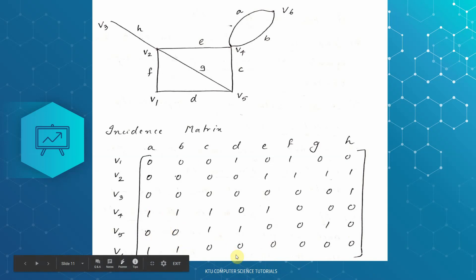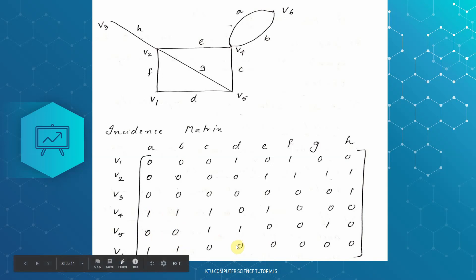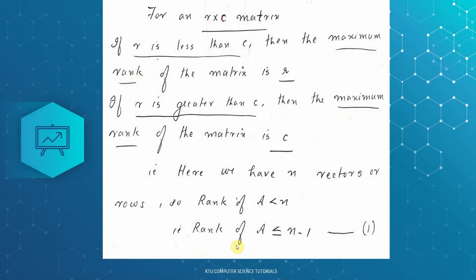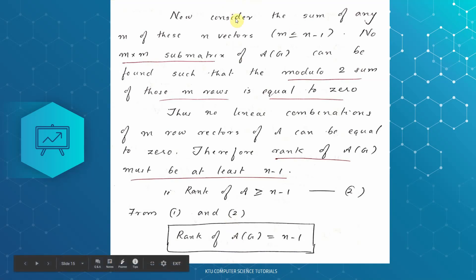For n vectors, we choose n vectors and the other one is zero vector. If we consider the sum of any m of these n vectors, where m is less than or equal to n-1, in the example we choose m value of 5, which is less than or equal to n minus 1.